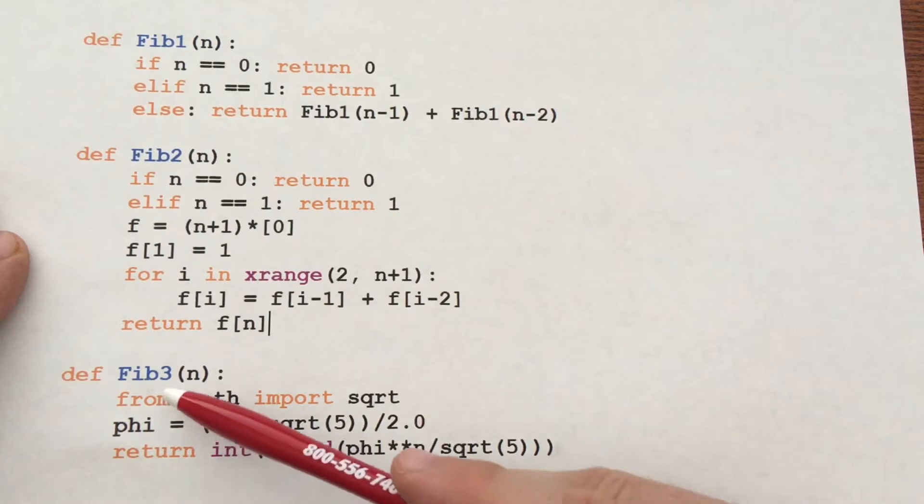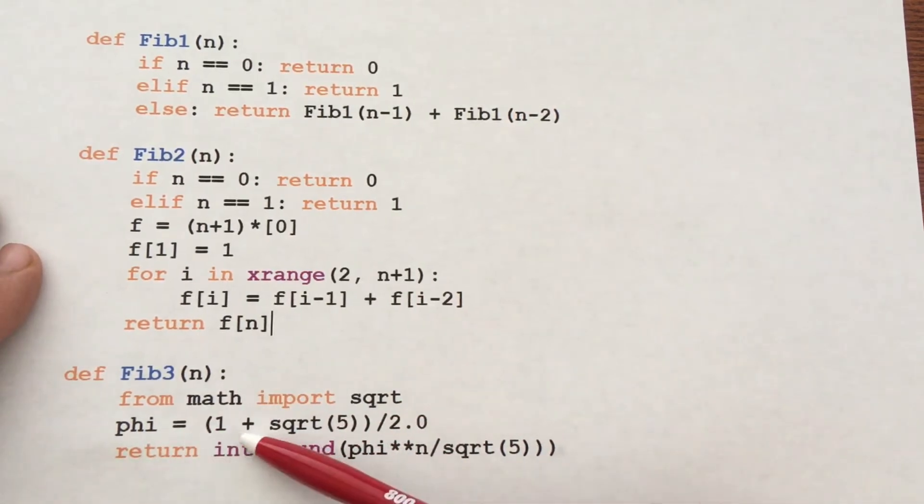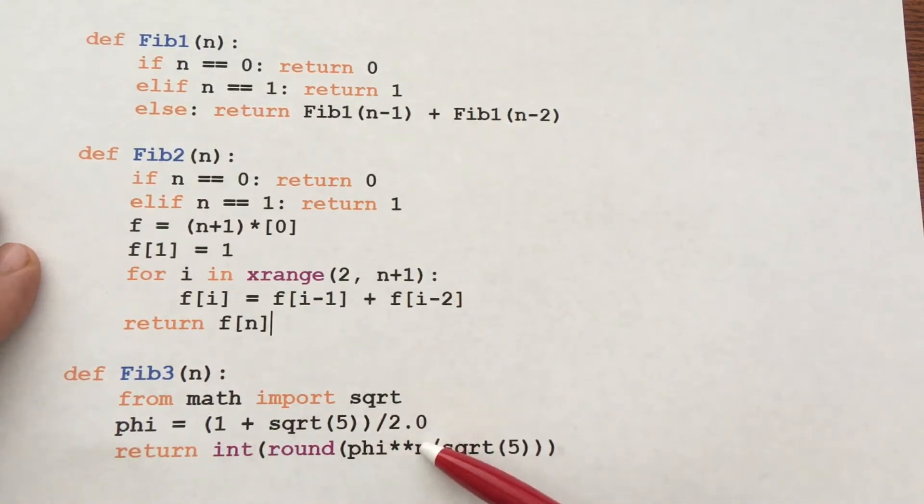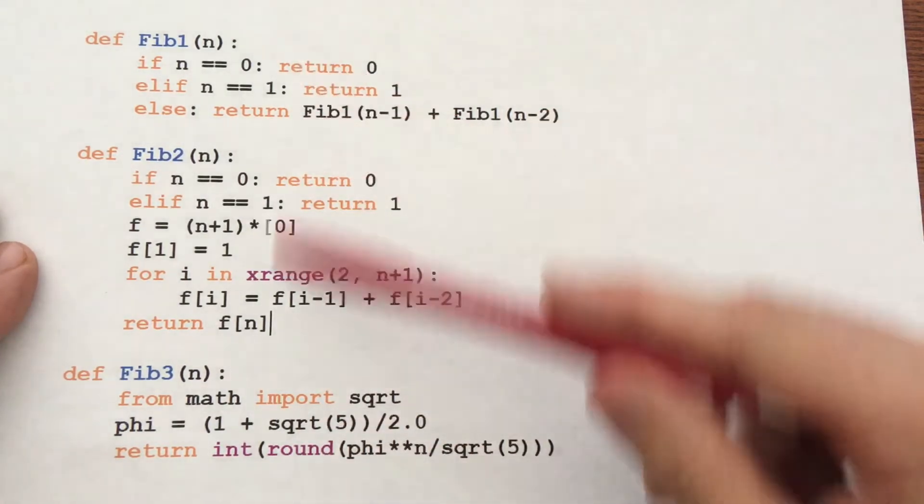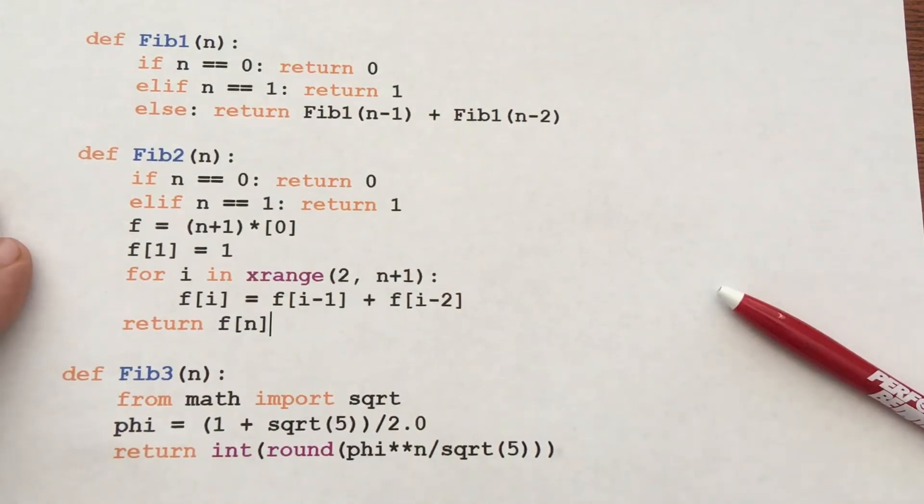We're going to compare that with fib3. Here's a third implementation, where phi is the golden ratio, 1 plus the square root of 5 over 2. And then we're just taking the golden ratio to the nth power, dividing that by the square root of 2, and then rounding it to the nearest integer. So there's three completely different implementations. Now I'm going to run them in Python and compare their speed.